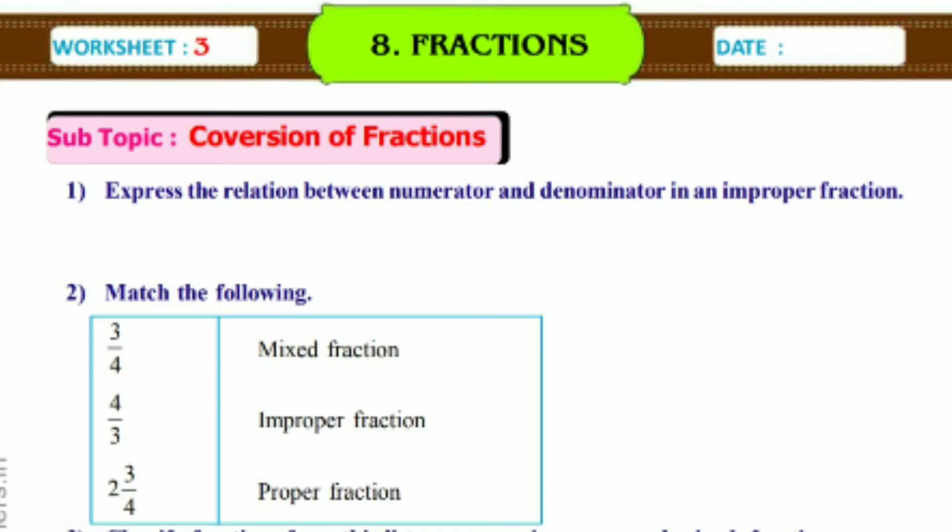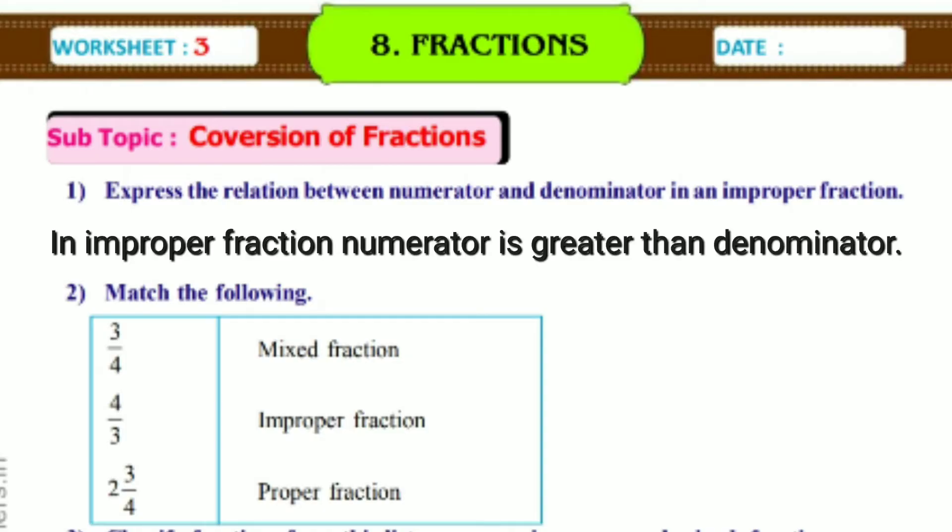First one, Express the relation between numerator and denominator in an improper fraction. Answer: In improper fraction, numerator is greater than denominator.